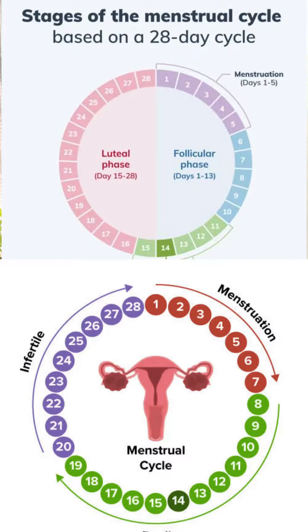We can discuss the Seed Cycle during the menstrual health cycle. We are going to divide the period cycle into two phases: first, the Follicular Phase; second, the Luteal Phase. Day 1 is ovulation, which is approximately 13 to 14 days.